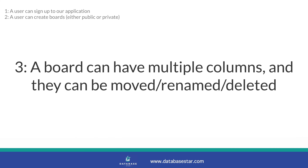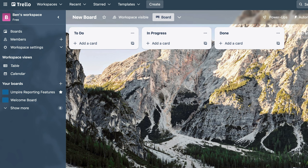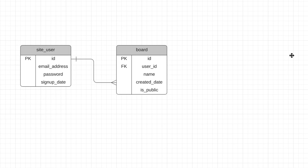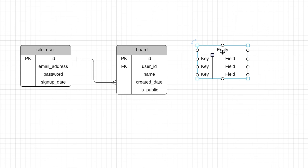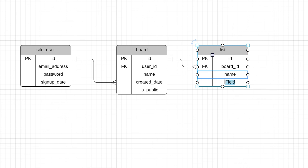Our third requirement is that a board can have multiple columns, which are called lists. There is a to-do column by default but it can be renamed or deleted. More columns or lists can be added and these columns can be moved around the board to be in a different order. We'll create a new table and call it list. It has an ID, a board ID so we know what board it belongs to, a name column, and a position column — a numeric field to identify where on the board it would be shown.